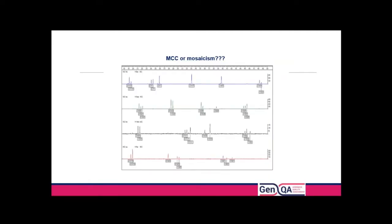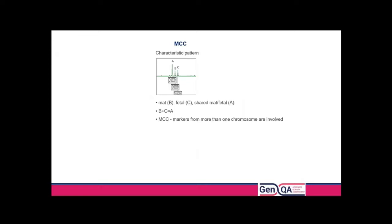The difference with maternal cell contamination is that you're going to see it affecting every chromosome, so it's not specific to just one chromosome — all markers will be inconclusive in some way. You can see lots of markers showing three peaks but in a different ratio, and the characteristic pattern is: a maternal-only allele, a fetal-only allele, and a shared allele that the fetus has inherited from the mother, where the maternal and paternal alleles are different sizes.